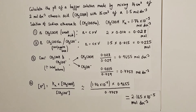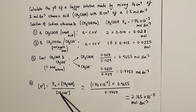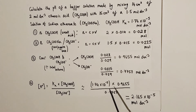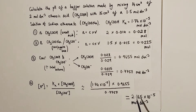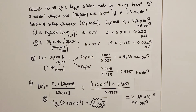We now apply our rearranged Ka expression: H+ = Ka × [HA] ÷ [A-]. Plugging in the numbers — Ka = 1.74 × 10⁻⁵, weak acid concentration = 0.9655, conjugate base concentration = 0.7757 — gives a hydrogen ion concentration of 2.165 × 10⁻⁵ mol/L. Finally, pH = −log₁₀(2.165 × 10⁻⁵) = 4.66 to two decimal places. That is the pH of this acid buffer solution.